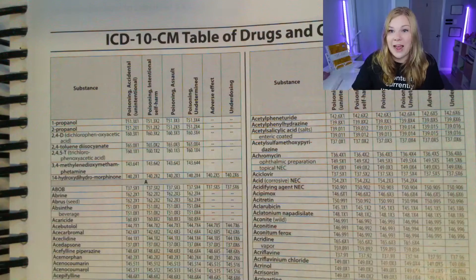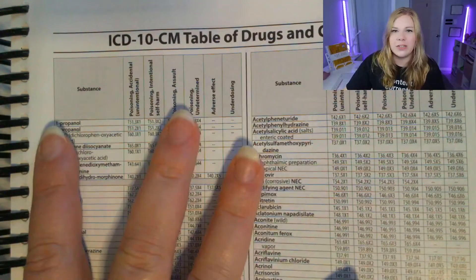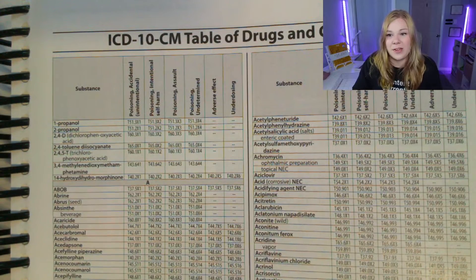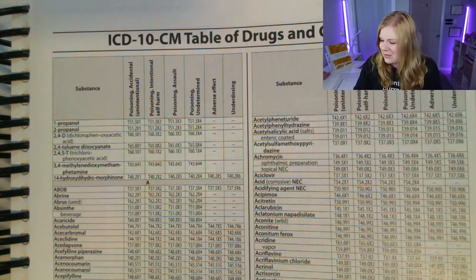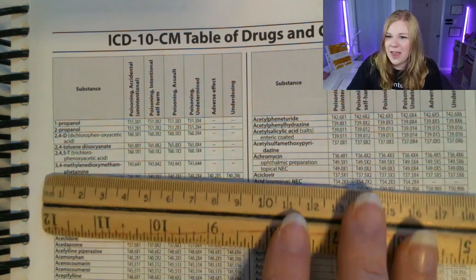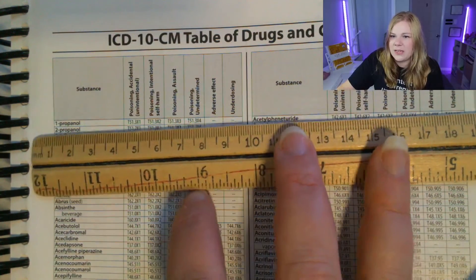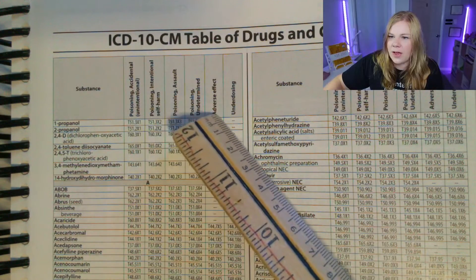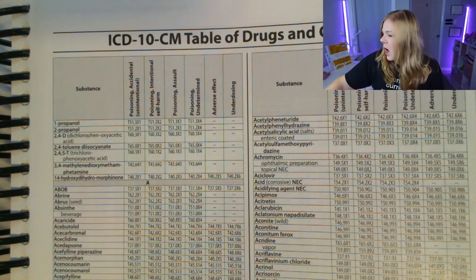One of the interesting differences between the Table of Drugs and Chemicals versus the Table of Neoplasms is that, if you remember from the neoplasm video, there was a short instruction at the top of the table telling you how to use it. Well, we don't have that in the Table of Drugs and Chemicals — there are no real instructions on how to use the table. In my version of the ICD-10-CM manual, the Table of Drugs and Chemicals is even smaller than the Table of Neoplasms, but we have six different columns.